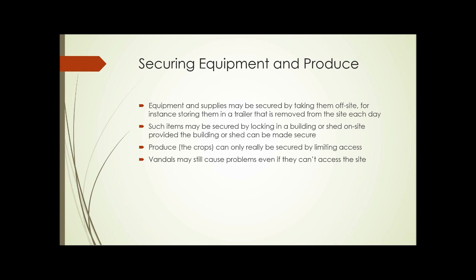So how can we secure our equipment and our produce? Equipment and supplies might be secured by taking them off site — for instance, using a trailer, storing them in a trailer, and then removing that trailer from the site each night to a more secure location. You could also secure those items by locking them in a building or shed on site, provided that building or shed can be made secure. The crops you're growing can only really be secured by limiting access to the site; you can't remove them each day and bring them back, so you have to keep people off the site.